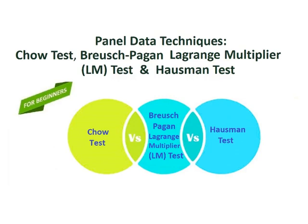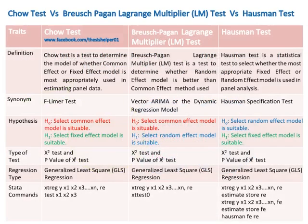Panel data techniques: Chow test, Breusch-Pagan Lagrange Multiplier (LM) test, and Hausman test. Chow test versus Breusch-Pagan Lagrange Multiplier (LM) test versus Hausman test.